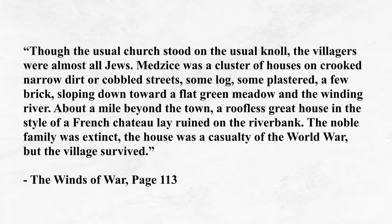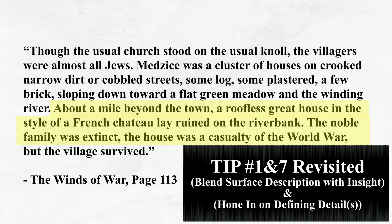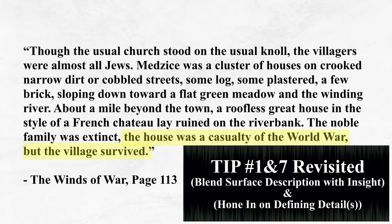'Though the usual church stood on the usual knoll, the villagers were almost all Jews. Medzis was a cluster of houses on crooked, narrow dirt or cobbled streets, some log, some plastered, a few brick, sloping down toward a flat green meadow in the winding river. About a mile beyond the town, a roofless great house in the style of a French chateau lay ruined on the riverbank. The noble family was extinct. The house was a casualty of the world war, but the village survived.' Here, in a similar manner to his character descriptions, Wouk follows a description of something that would be a bit bland on its own — that of the village — with something very specific and thought-provoking: the ruined French chateau. When he mentions the house was a casualty of the world war but the village survived, he provides an insight that gives it character. Now the reader will think of it as a tough little place, able to endure through great hardship.